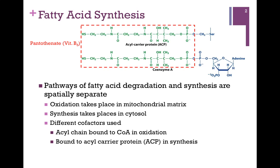We also find that different cofactors are used. Recall that in beta-oxidation, our acyl chain was attached to coenzyme A. We're also going to use coenzyme A in this process, but our growing acyl chain is going to be connected to acyl carrier protein. A comparison of the two is at the top of the screen here. The adenine makes that the coenzyme A molecule, and the business end of our molecule is that sulfhydryl group. In acyl carrier protein, it's attached to a serine side chain on the enzyme. The groups present in acyl carrier protein and coenzyme A are identical — this is pantothenic acid, or vitamin B — so they clearly serve the same function.